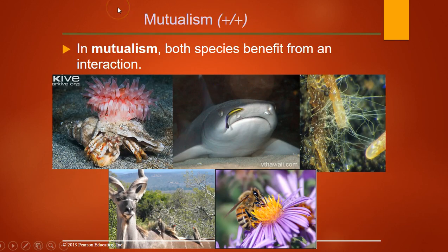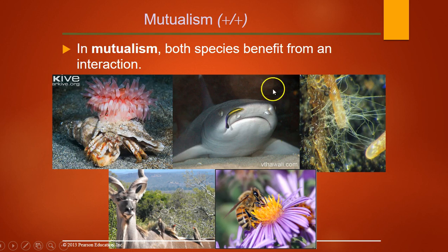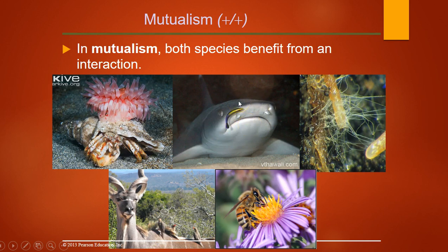In a mutualism, both species benefit. A fun example is a hermit crab and sea anemone: the anemone protects the crab, gets food particles from its meals, and gains mobility from this otherwise sessile organism. Here we see a shark and a cleaner wrasse — a fish that does a little dance, then picks parasites off the shark, getting food while the shark gets fewer parasites. There's also a blenny that mimics the cleaner wrasse's dance but instead takes a bite out of the shark and swims away — that's not a mutualism.